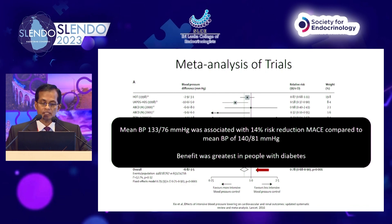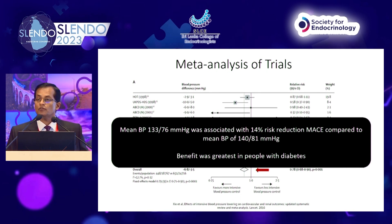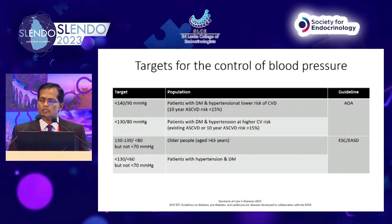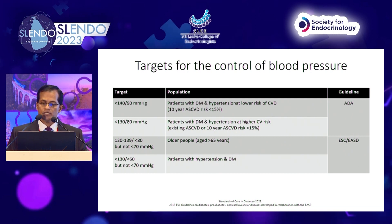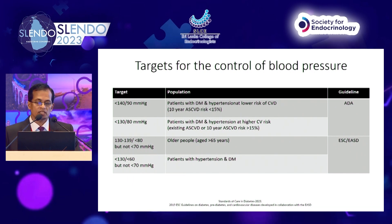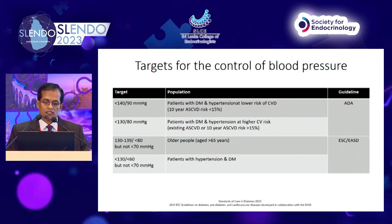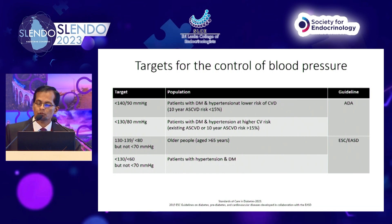A mean blood pressure of 133/76 was associated with a 14% reduction in MACE compared to a mean blood pressure of 140/81, and the benefit was greatest in people with diabetes. Regarding guidelines: the ADA says less than 140/90 for diabetic patients with hypertension at low risk, and less than 130 for high cardiovascular risk. The ESC/EASD says less than 130/80 for patients with both hypertension and diabetes — stricter than the ADA.